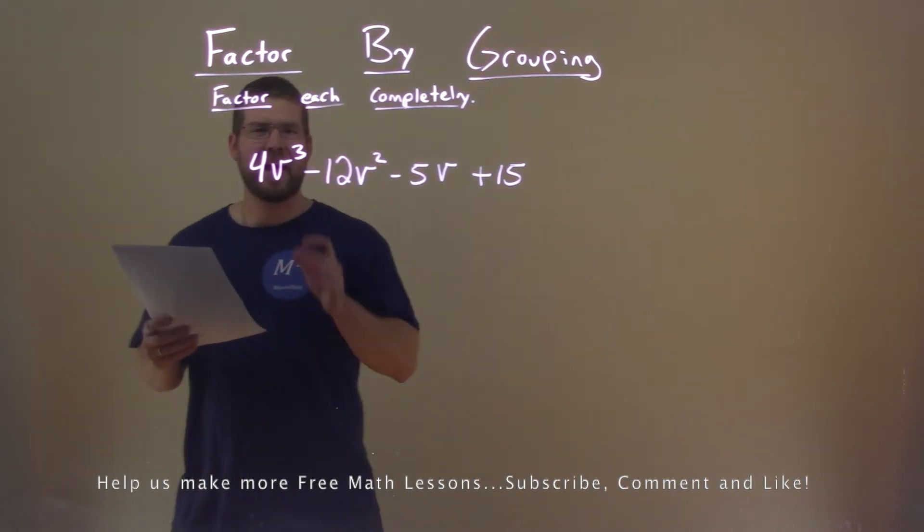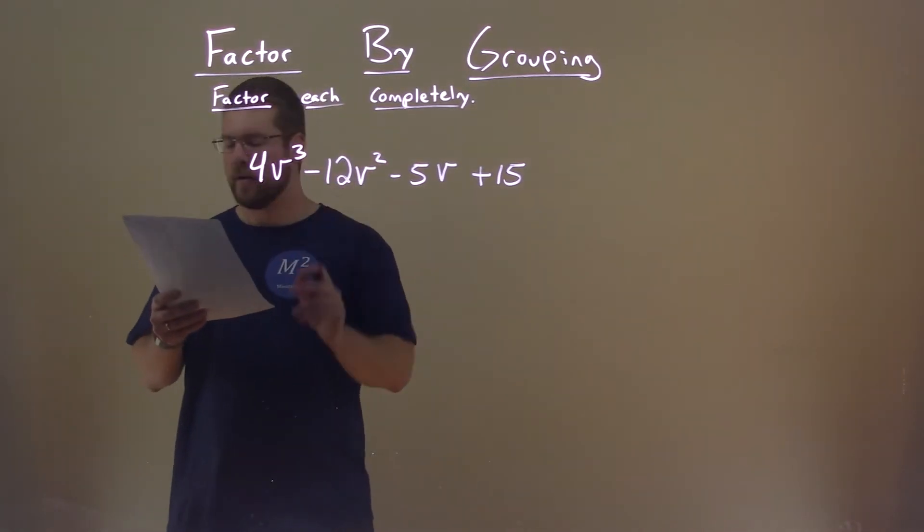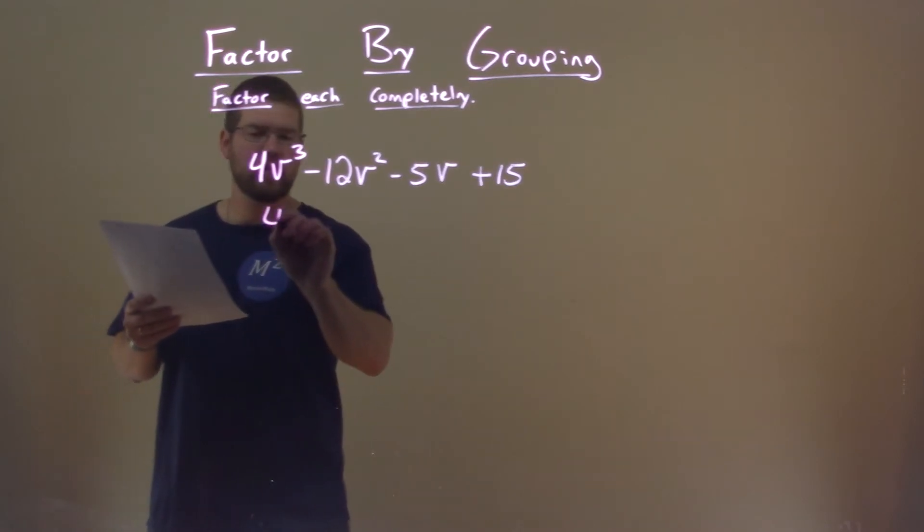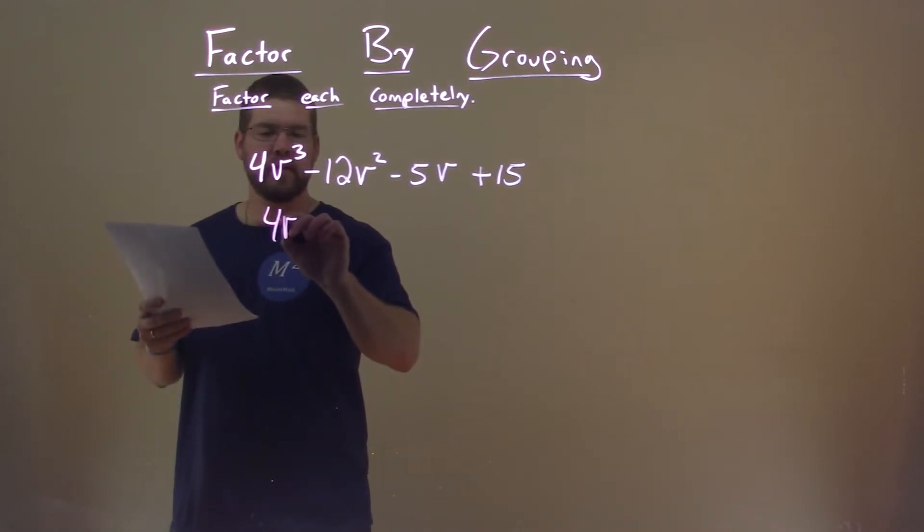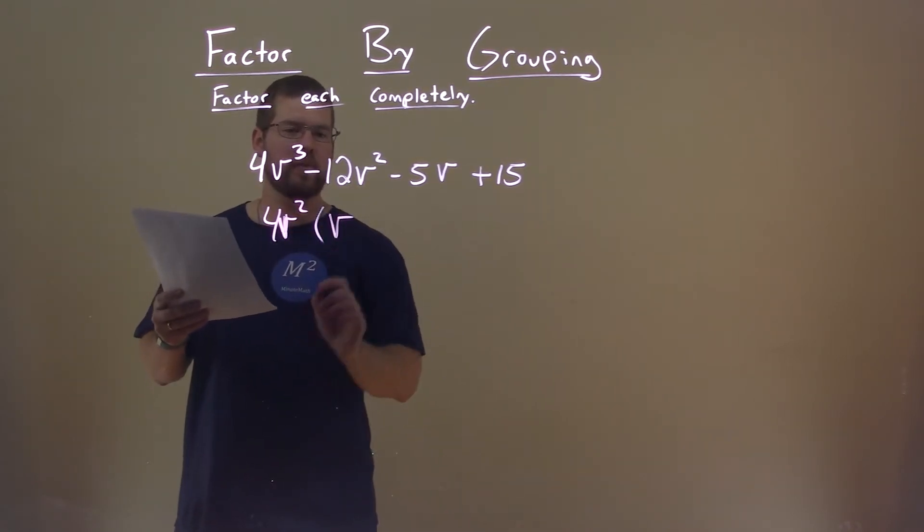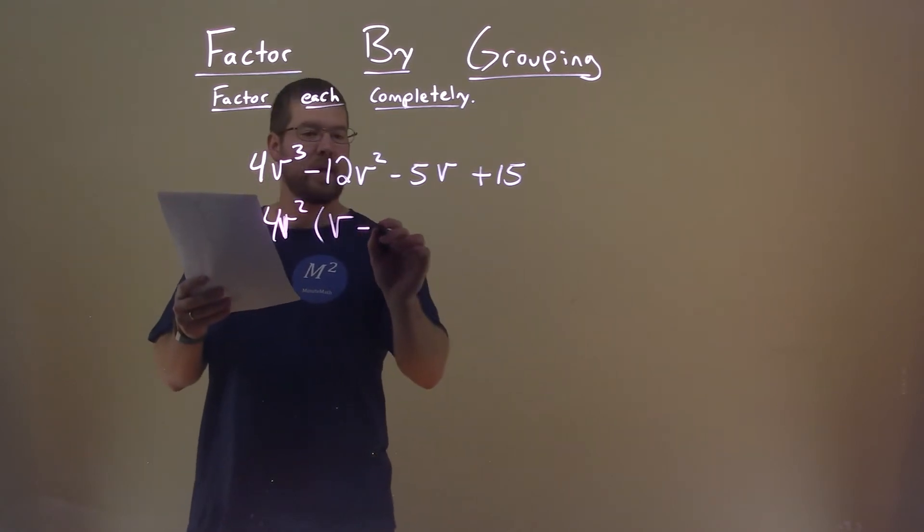The first two numbers here, I can see that 4v² goes into both of them. So if I pull that out, 4v² here, I pull that out of both of them, what are we left with? Well, v in the first part minus just a 3.